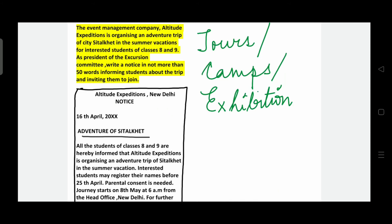The second notice covers tours, camps, and exhibitions. The event management company Altitude Expeditions is organizing an adventure trip to the city of Sitalkhet in the summer vacations for interested students of classes 8 and 9. As president of the excursion committee, write a notice in not more than 50 words informing students about the trip and inviting them to join. Draw a box, write the name of the issuing agency — Altitude Expeditions, New Delhi — leave a line, write 'NOTICE', leave a line, then the date. The heading is 'Adventure of Sitalkhet' — underline it.